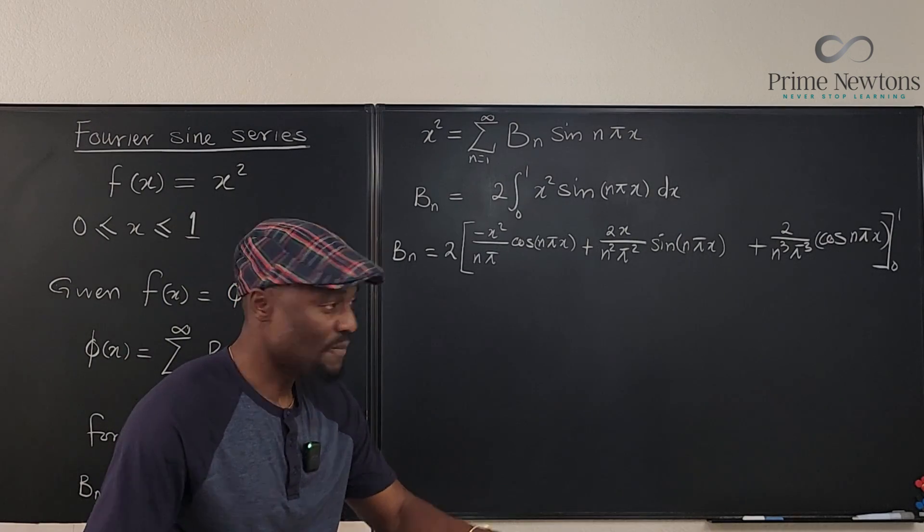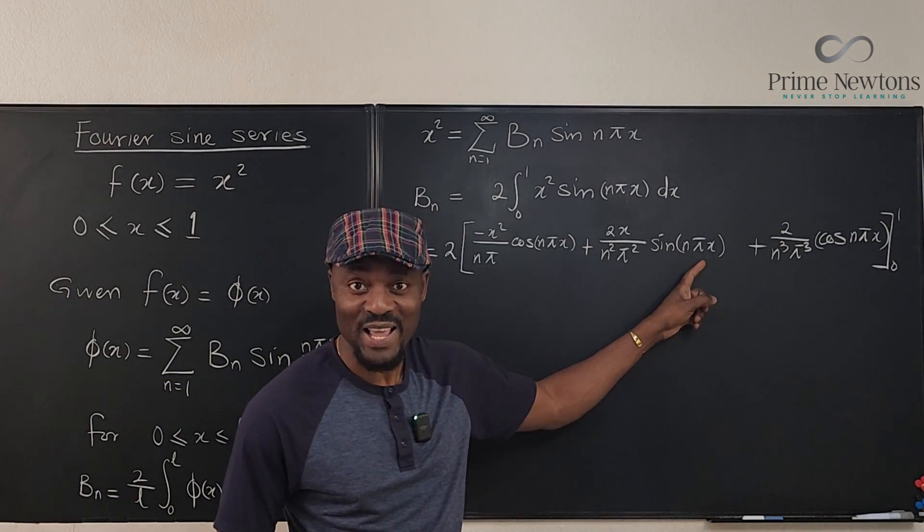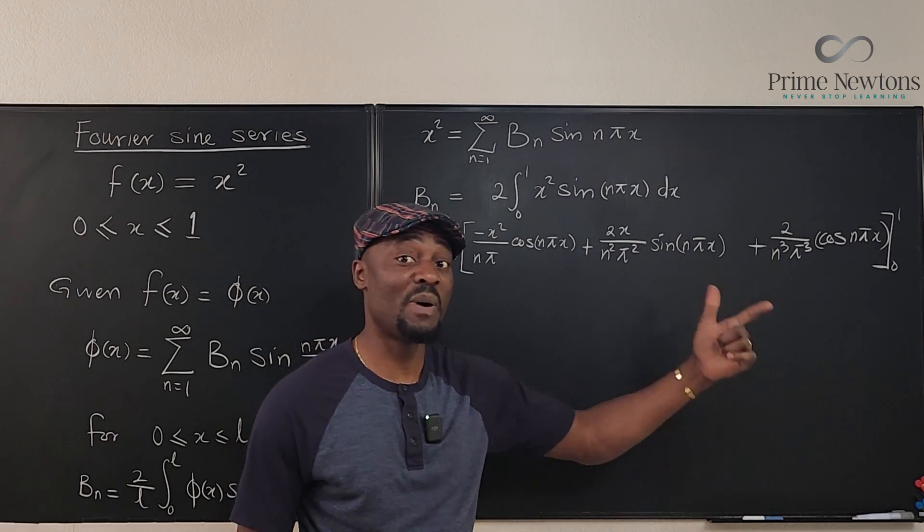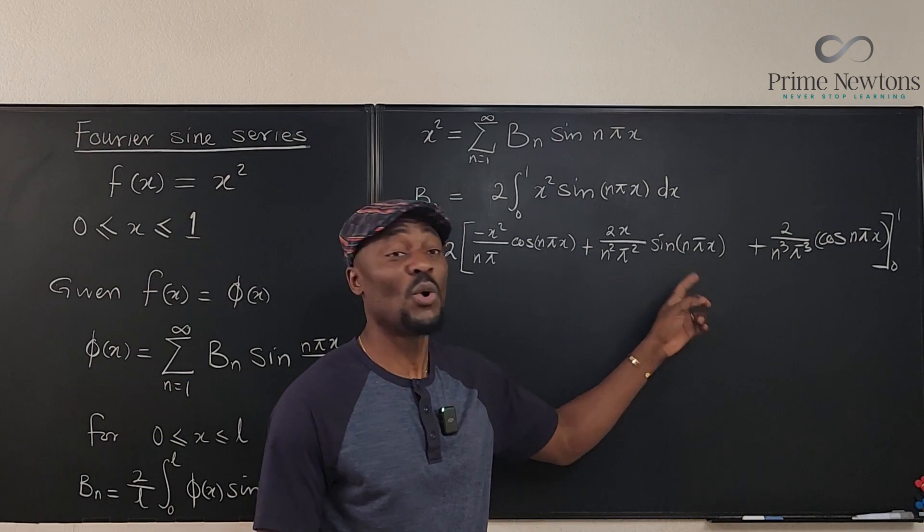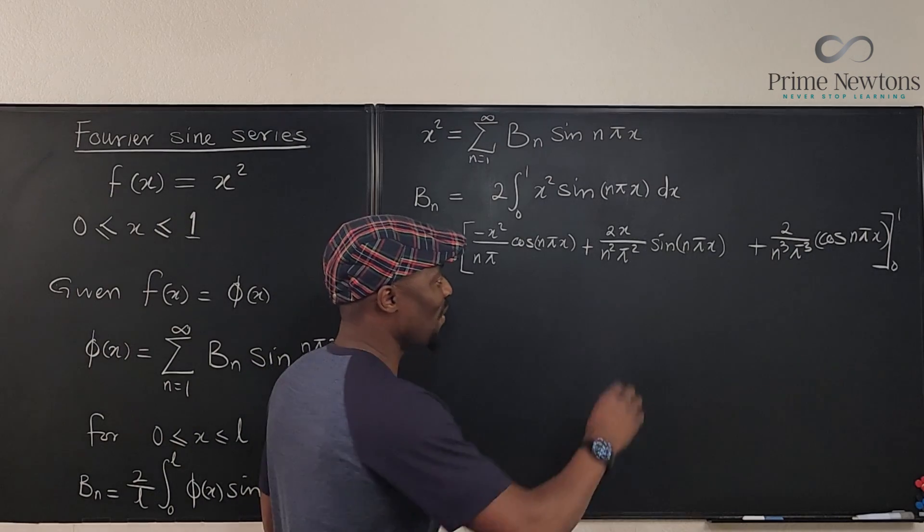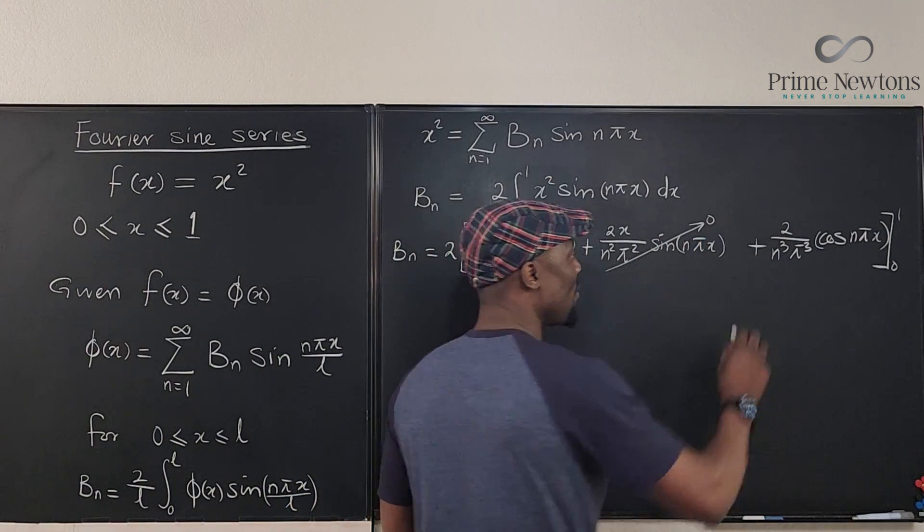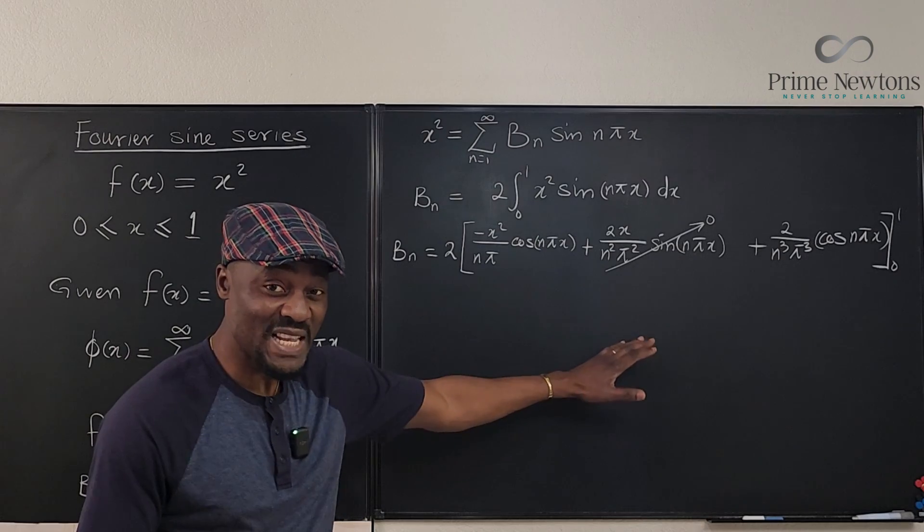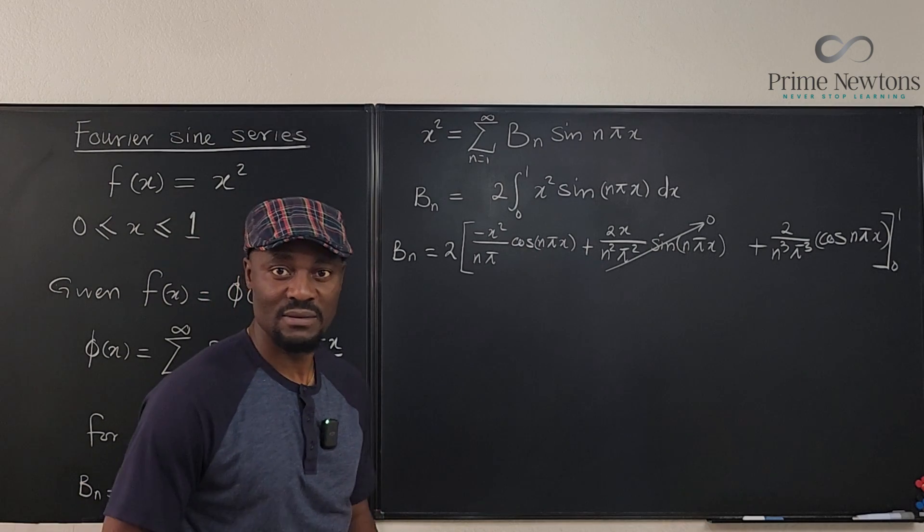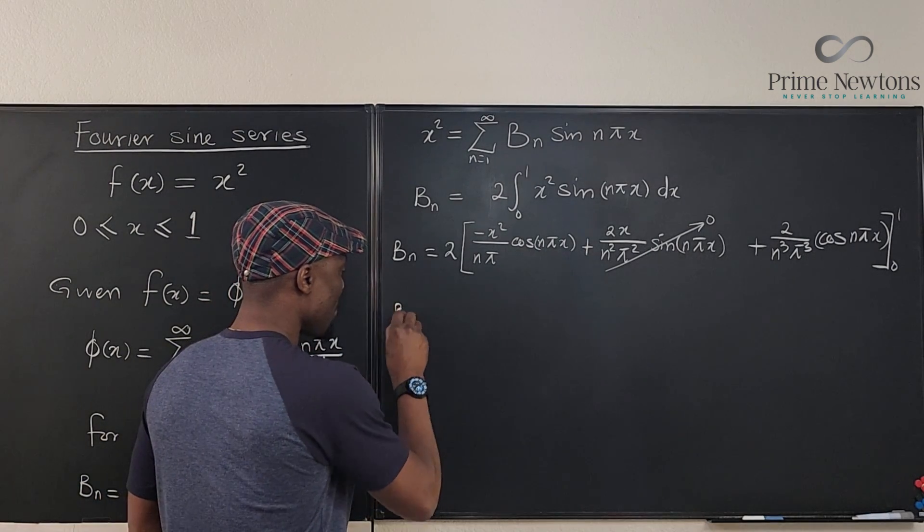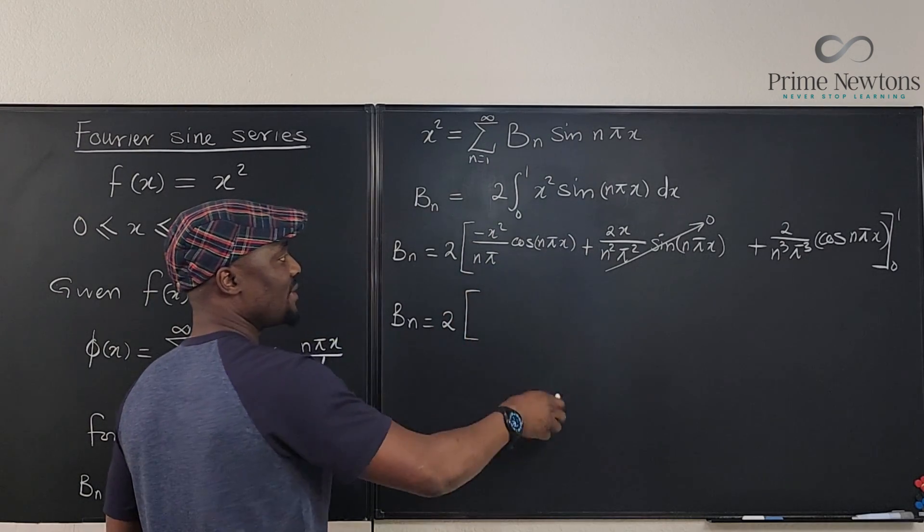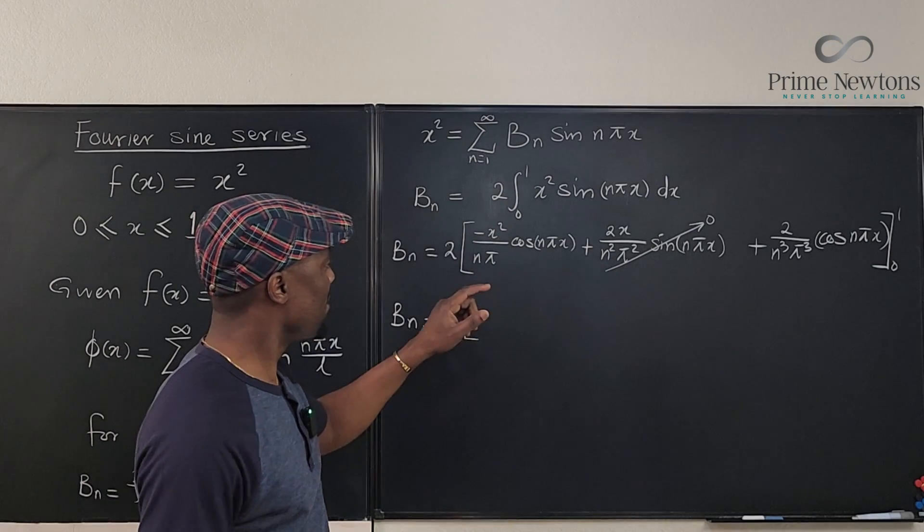Something of interest: whenever you're integrating something involving pi, you want to pay attention to sine. Because sine does not know how to deal with pi. Whether it's zero pi or one pi or two pi, it will always be zero. If you try to evaluate this, you will get zero in any case. This middle term will always give you zero, so we don't really need to deal with that. Let's evaluate this and see what we get.